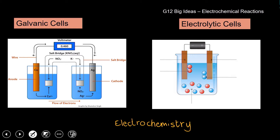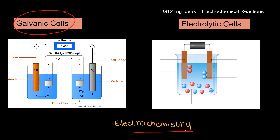Let's have a look and remind ourselves what we did last time. Looking at the screen, we have electrochemistry and two types of cells: the galvanic cell and the electrolytic cell. The galvanic cell is the one that has the salt bridge and it is a spontaneous reaction, so it does not need an external energy source.